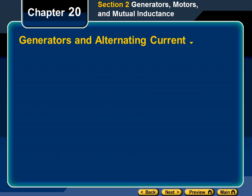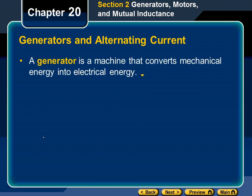Chapter 20, Section 2: Generators and Alternating Current.